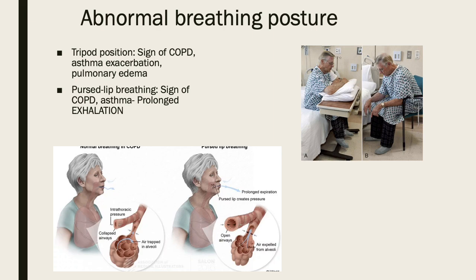We may also note abnormal breathing postures. The tripod position — leaning forward — is usually a sign of COPD or asthma and helps with lung expansion. Most people think sitting upright is best, but lungs expand behind us as well, so if the back is against the bed there's less room to expand. Leaning forward allows the lungs to expand posteriorly. Pursed-lip breathing — a prolonged exhalation that looks like whistling — is usually a sign someone has too much carbon dioxide; it's actually a body defense mechanism to help get CO2 out.